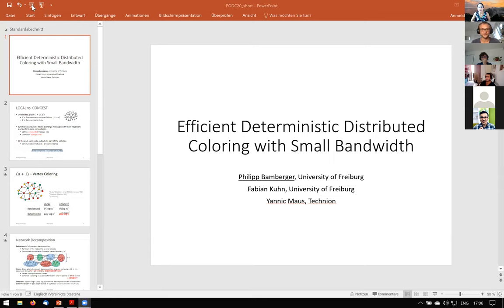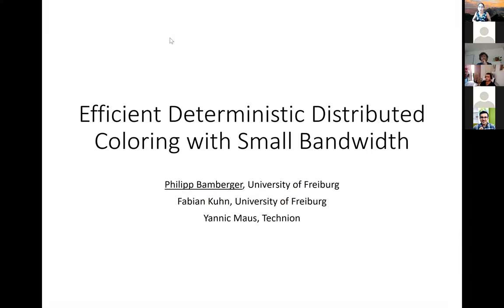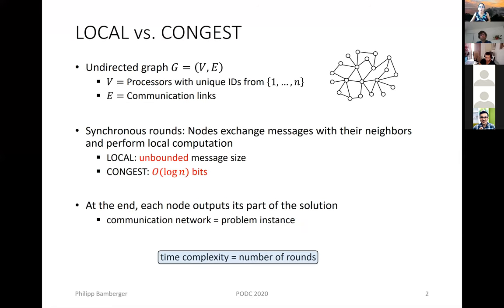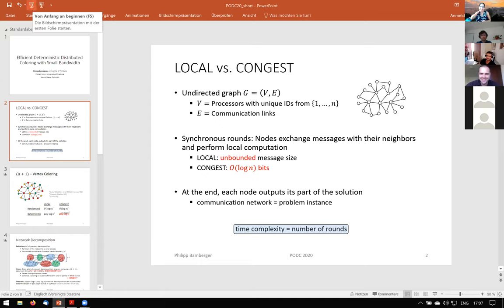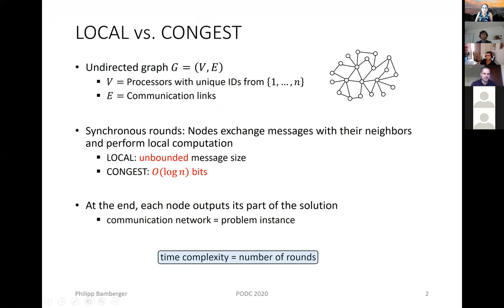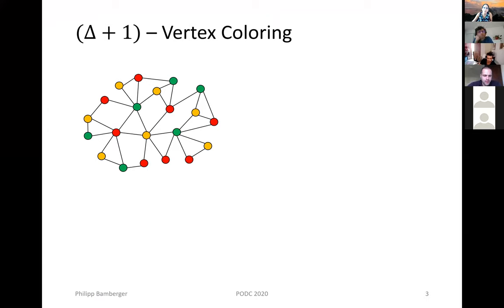Thanks Yannick. We move to the next talk: 'An Efficient Deterministic Distributed Coloring with Small Bandwidth,' presented by Philip Bumberger. The local and Congest models are two classic synchronous message-passing models. In the local model, messages can be of unlimited size; in the Congest model, messages are restricted to O(log n) bits. The graph problem we consider is the Δ + 1 coloring problem.